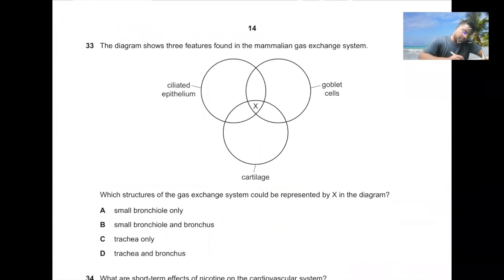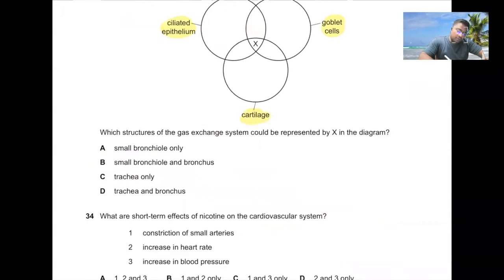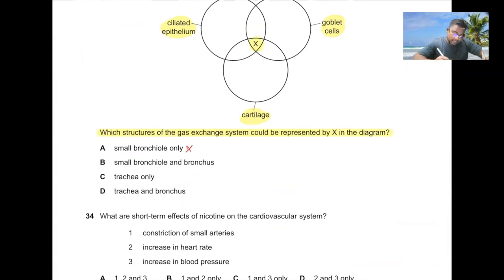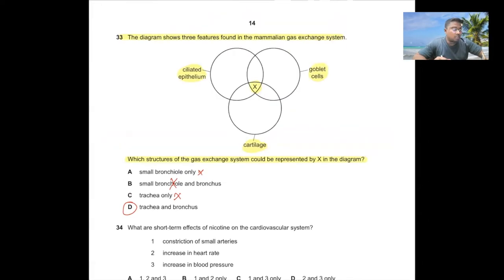Question number thirty-three. The diagram shows three features found in the mammalian gas exchange system: goblet cells, ciliated epithelium, and cartilage, all found in structure X. Small bronchioles do not contain cartilage. Trachea and bronchus both contain cartilage, ciliated epithelium, and goblet cells. The answer is D.